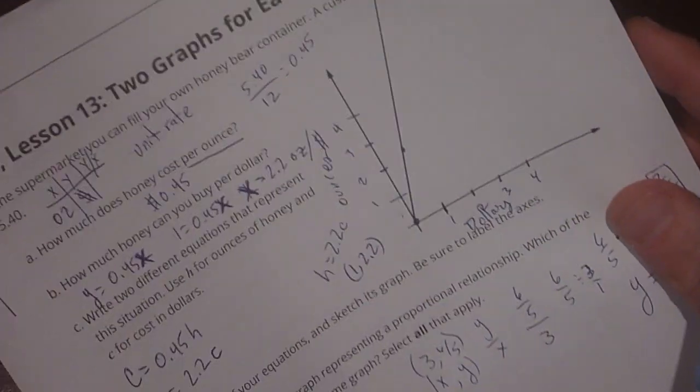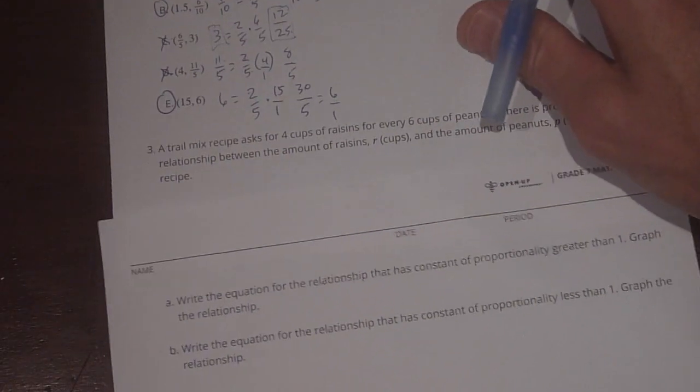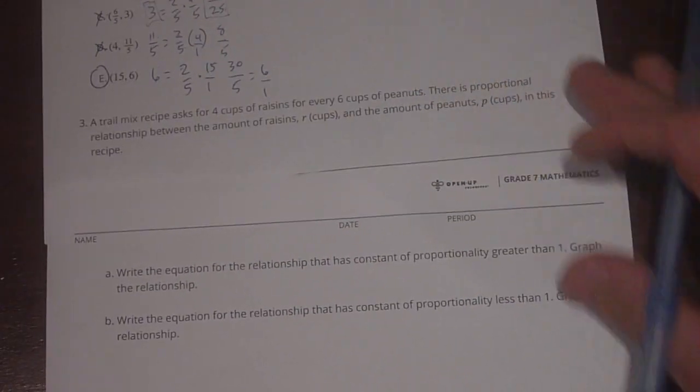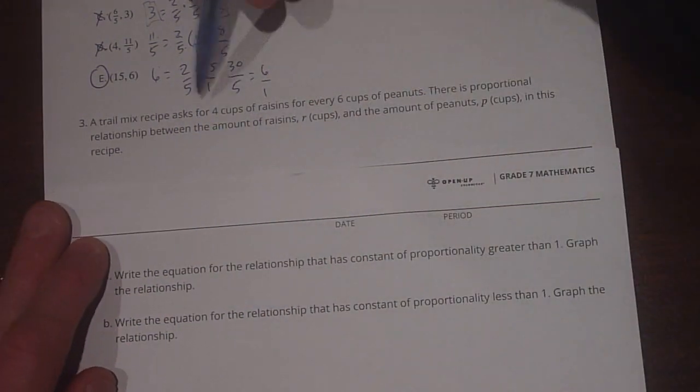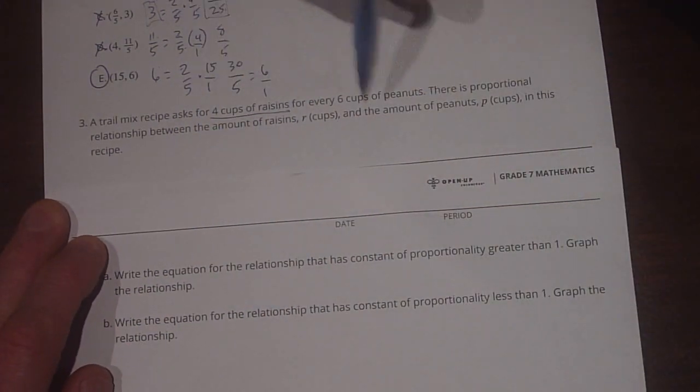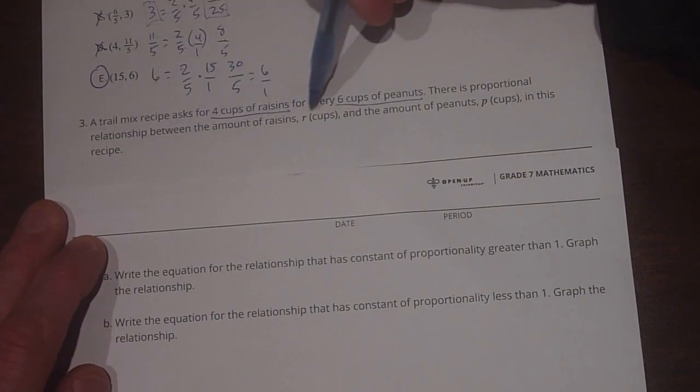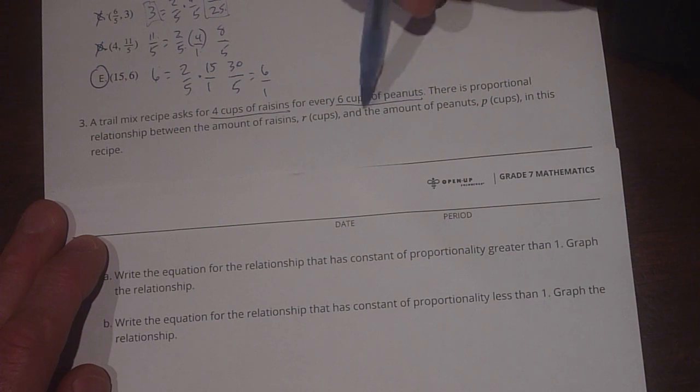Okay. Number 3. Number 3 says, let's get this lined up here. A trail mix recipe asks for 4 cups of raisins for every 6 cups of peanuts. There's a proportional relationship between the amount of raisins, R cups, and the amount of peanuts, P cups, in this recipe.